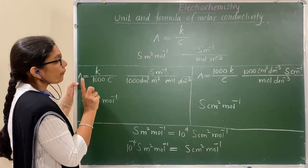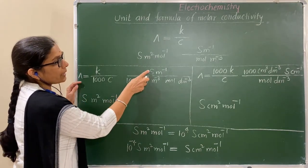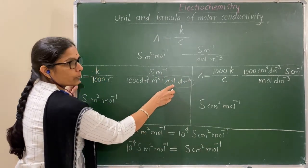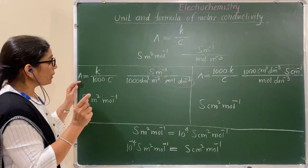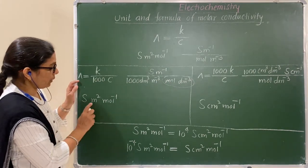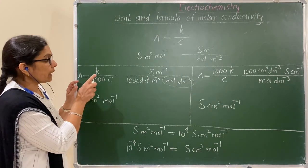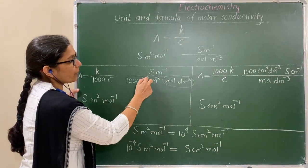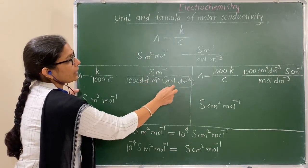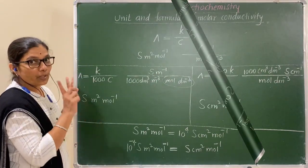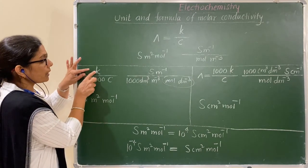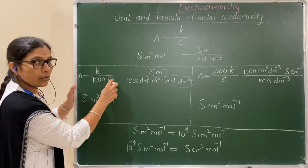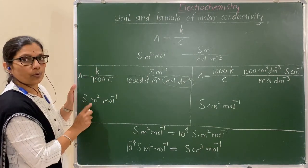First: if conductivity is given in siemen per meter and concentration in mole per dm cube, and if you want the molar conductivity in the SI unit, that is siemen meter square per mole, then use this formula. You know that 1000 dm cube is equal to 1 meter cube, therefore the dm cube terms cancel and the conversion gives this result. Remember: conductivity in siemen per meter, concentration in mole per dm cube — use this formula, and lambda is obtained in siemen meter square per mole.